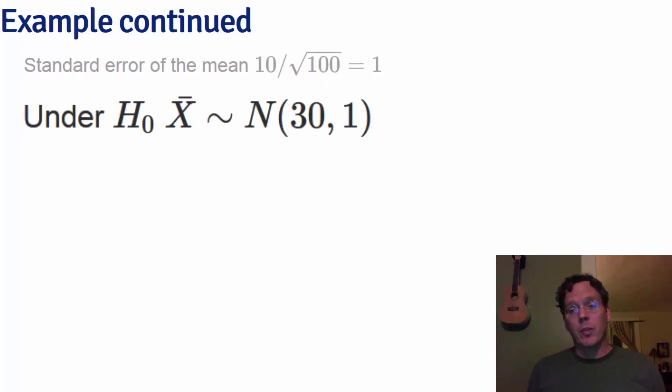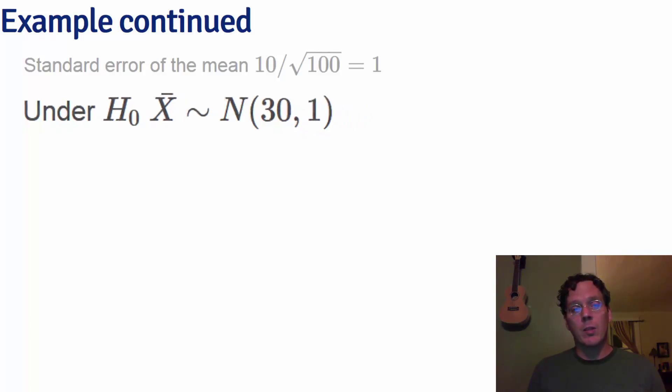Under the null hypothesis where under H0 mu is equal to 30, the distribution of the sample mean x bar is normal with a mean of 30 and a variance of 1, which we just calculated as the square of the standard error of the mean in the line above.